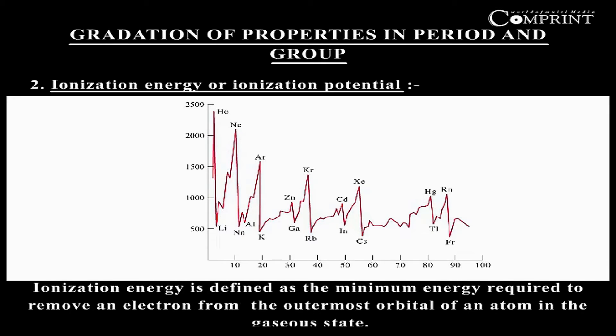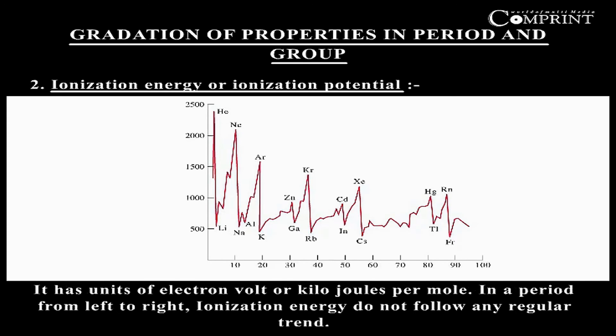Ionization energy or ionization potential is defined as the minimum energy required to remove an electron from the outermost orbital of an atom in the gaseous state. It has units of electron volt or kilojoules per mole.